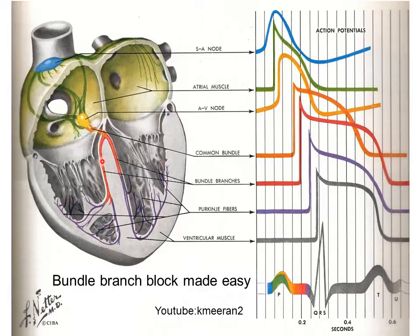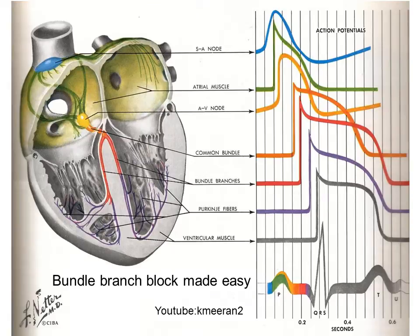In complete right bundle branch block, the right bundle is completely ischemic. The wave travels down the left bundle first and depolarises the left ventricle, which contracts. After a delay, the wave travels across the septum from left to right, giving you a delayed right ventricle contraction. On the ECG you'll see two R waves — first the left ventricle R wave, then the right ventricle R wave — making the complex look quite broad.